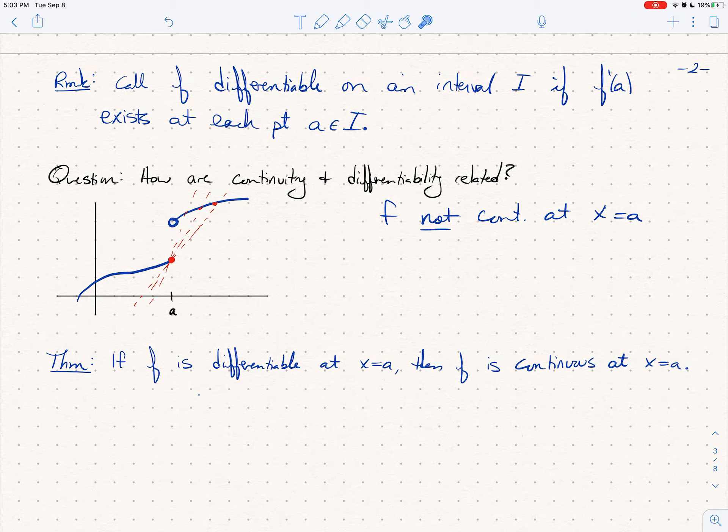And so this example at least, this is only an example, but this example suggests that if you're not continuous at a, let's go ahead and say f prime of a does not exist, seems to suggest if you're not continuous at a, then the derivative doesn't exist.